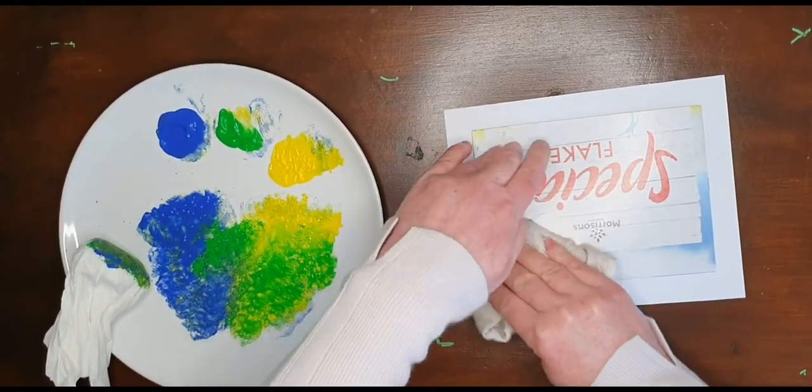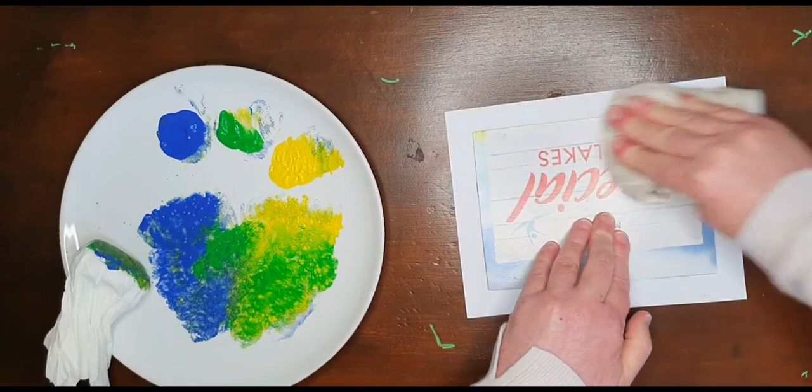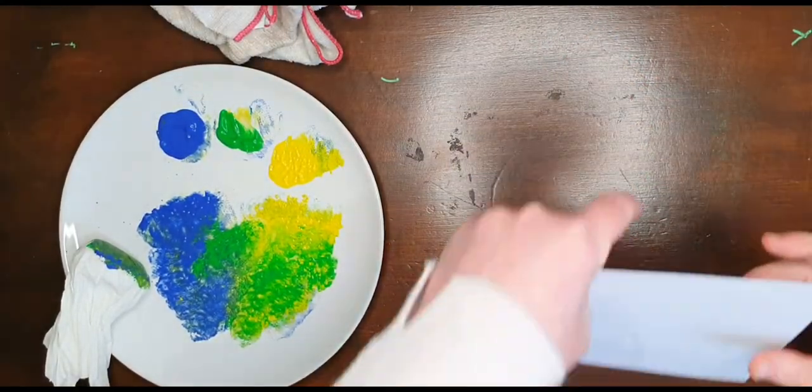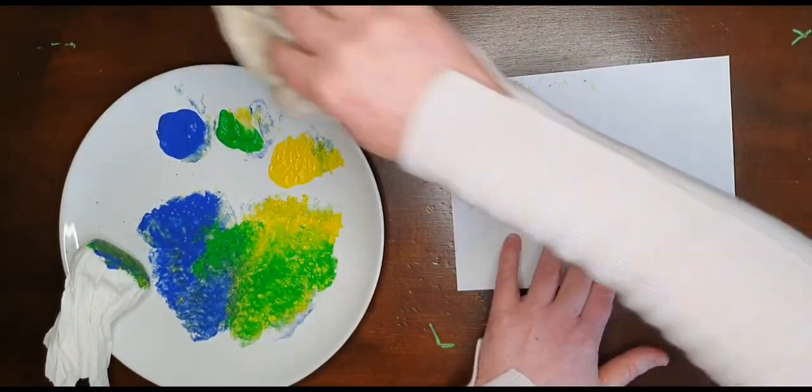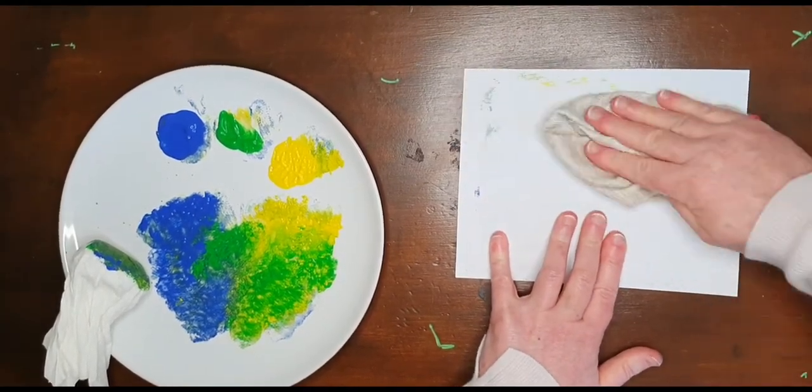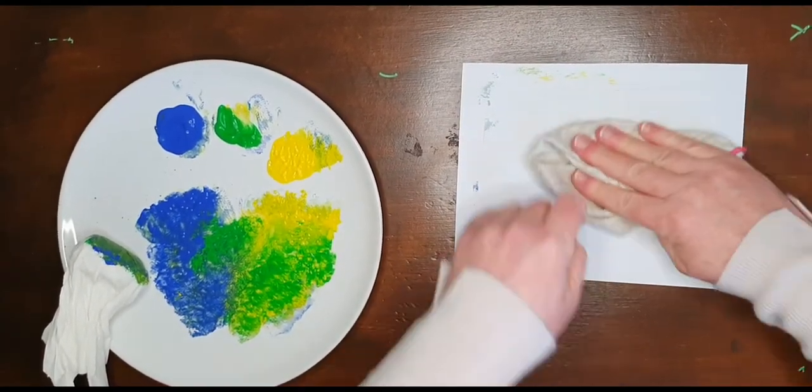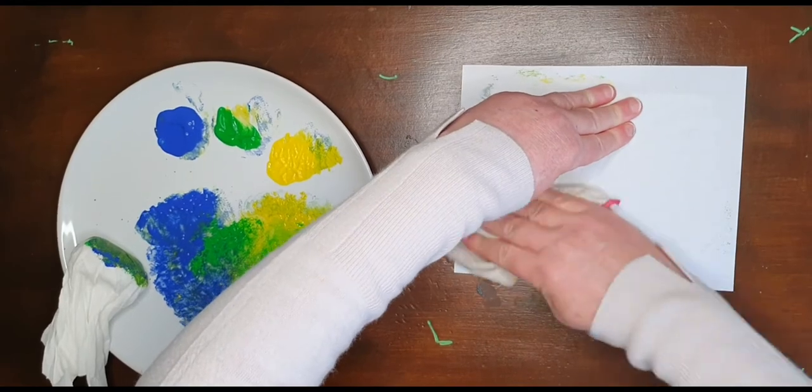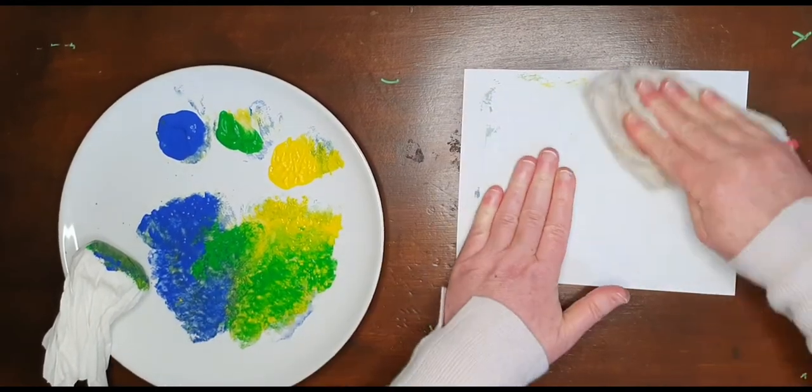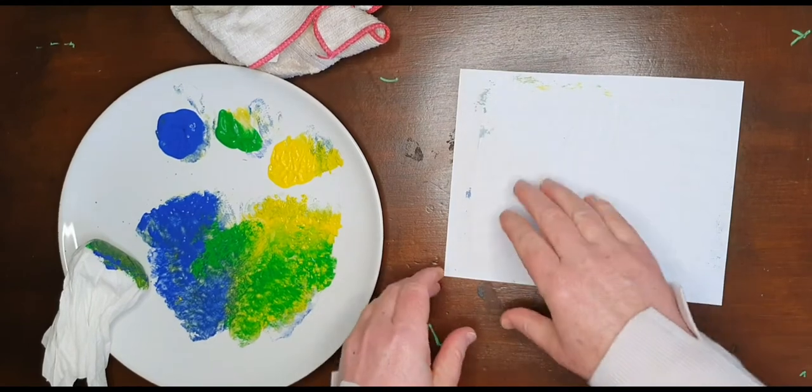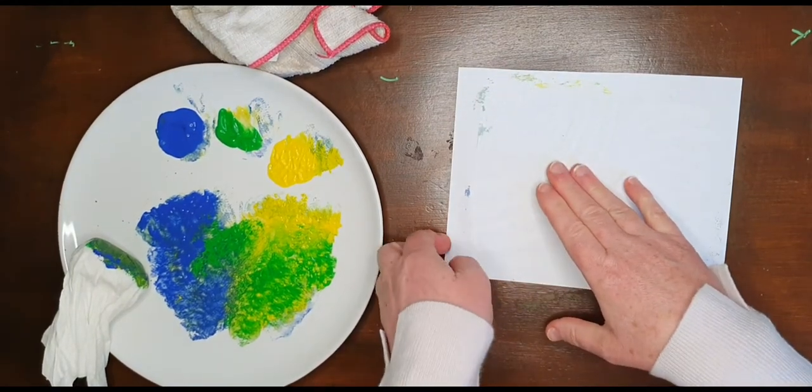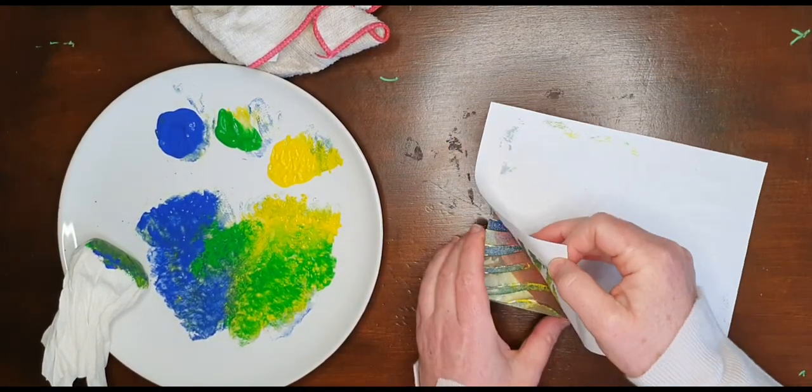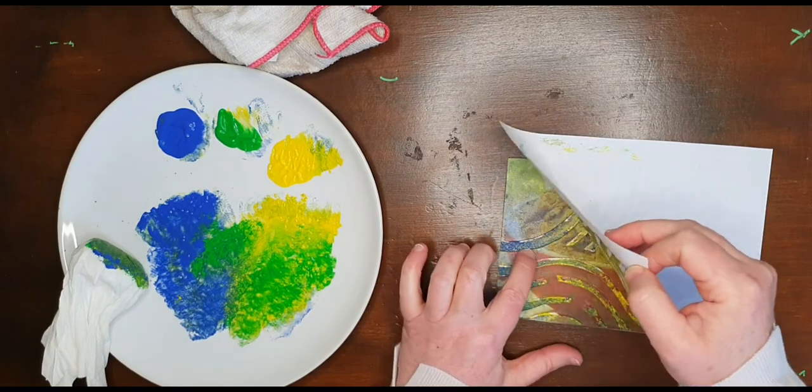Press it so it's stuck to the paper, turn it over, and rub it on the other side. And be careful not to do it too long this time because it was just starting to stick last time. So I'm going to stop there and peel the paper off like so.